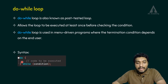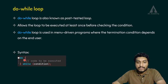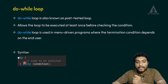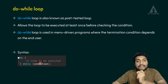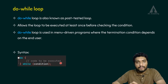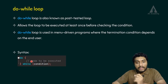In the do-while loop syntax, we have the do keyword, followed by an opening curly brace and a closing curly brace. Inside the body, the execution lines — we can write single or multiple lines of code.